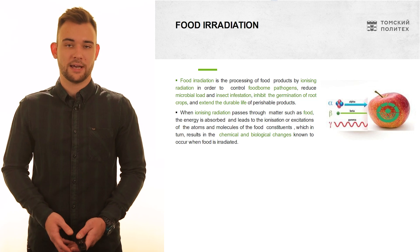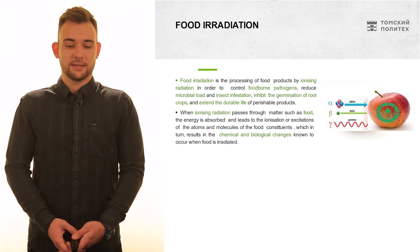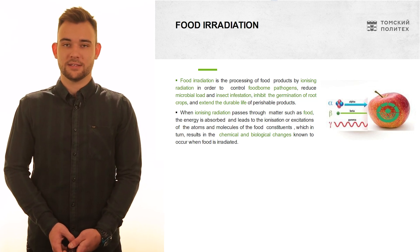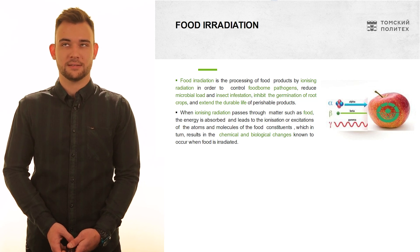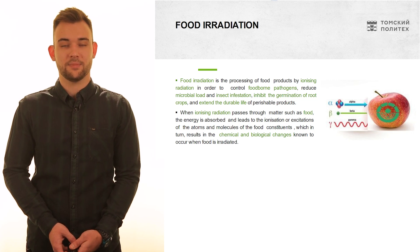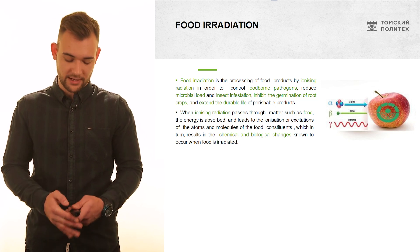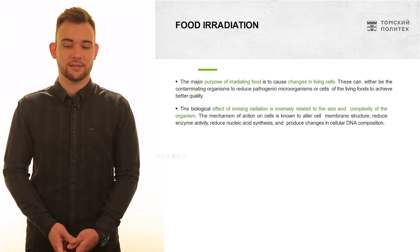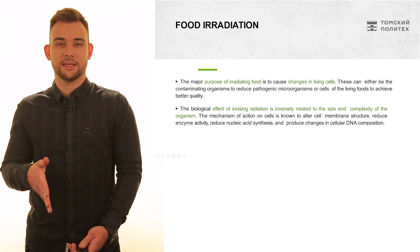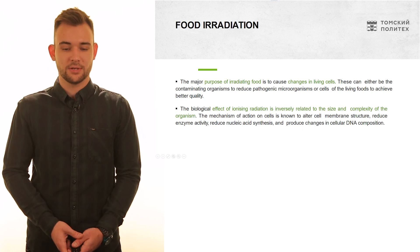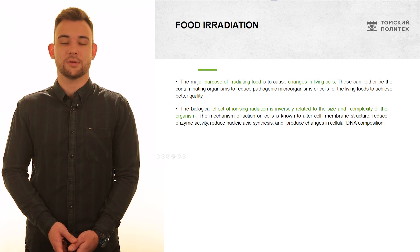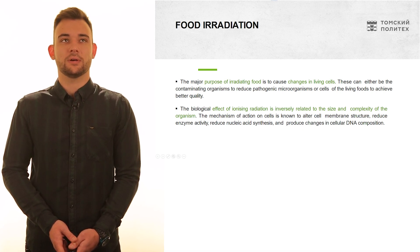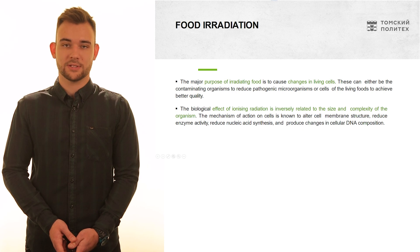It is also done to extend the shelf life of products. When ionizing radiation passes through food material, it changes its living structure and cells, having a biological and chemical effect on them. The purpose is either to eliminate contaminating pathogens and reduce pathogenic microorganisms, or to treat the living food itself to improve the quality of the food material.